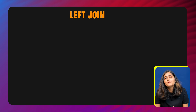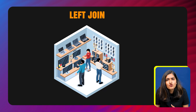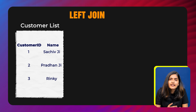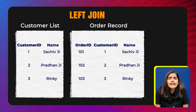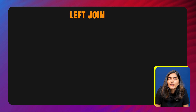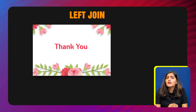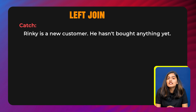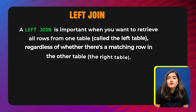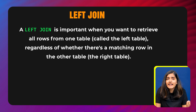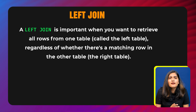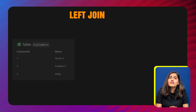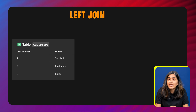Now moving ahead with left join. Let's say you run a small electronics shop and you keep two types of records: a list of all customers whether or not they've bought something, and a record of every order that has been placed. You want to send a thank-you message to your customers, but you also want to see what each one has ordered, if anything. Here's the catch — Rinki is a new customer who hasn't bought anything yet, but you still want her in the report just to know she exists in your customer base. This is where left join comes in. A left join retrieves all rows from the left table regardless of whether there is a matching row in the right table. Here we have a customer table as the left table containing customer ID and name, and an orders table as the right table containing order ID, customer ID, and product.